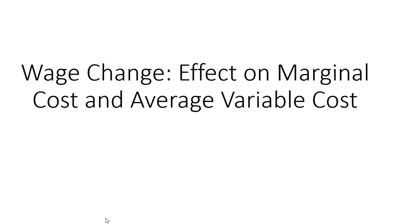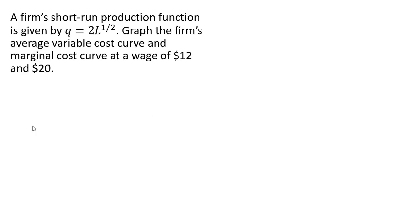In this video, we're going to look at how a wage change affects marginal cost and average variable cost. We have a firm with a short-run production function given by Q equals 2 times L to the 1 half power. L is units of labor. Q is quantity of output.